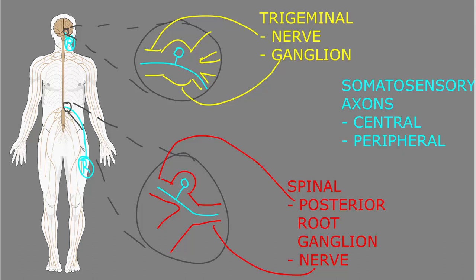So if we take an example of a nerve here going to the leg, we would have some sort of somatosensory receptor here in the skin or deep tissues, and that somatosensory receptor would be connected to the peripheral axon of this somatosensory neuron.